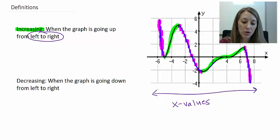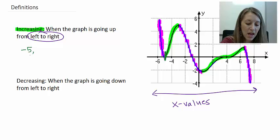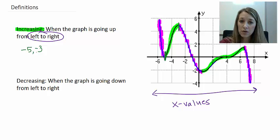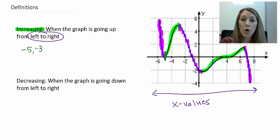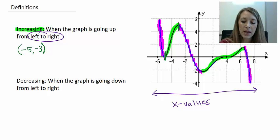Let's talk about the increasing intervals first. My first increasing part starts at negative 5 and goes up until negative 3. I'm writing these in interval notation, smallest to largest value. The endpoints always use open parentheses because at the endpoints it's neither increasing nor decreasing — it's just the point in between those two intervals.